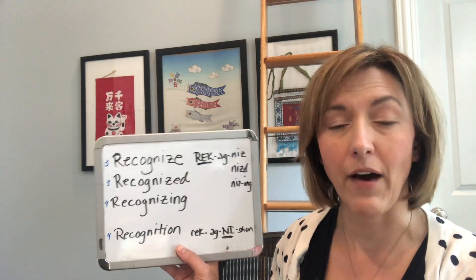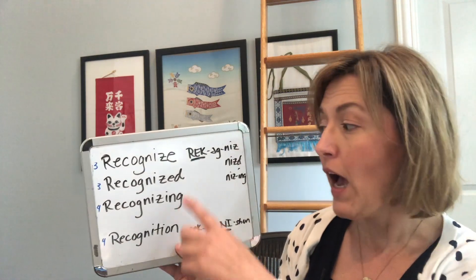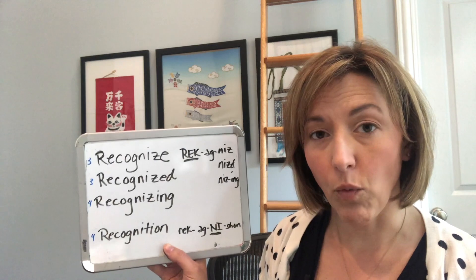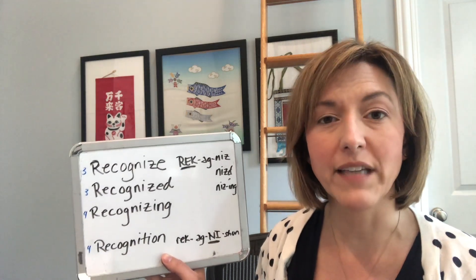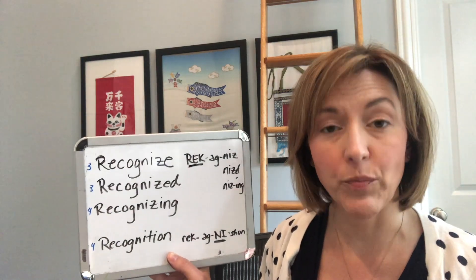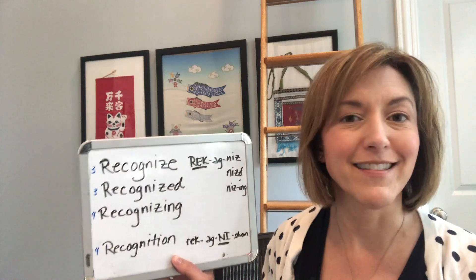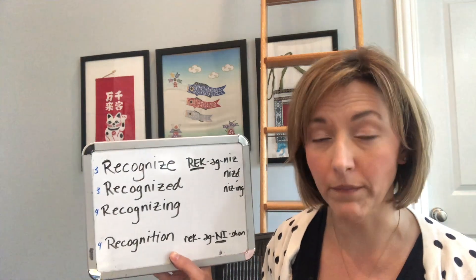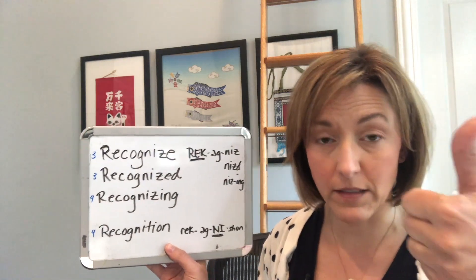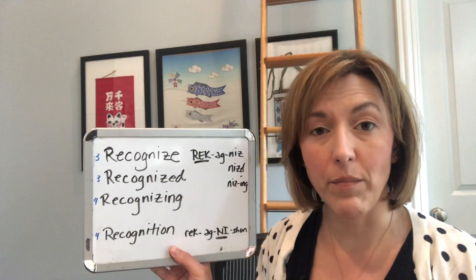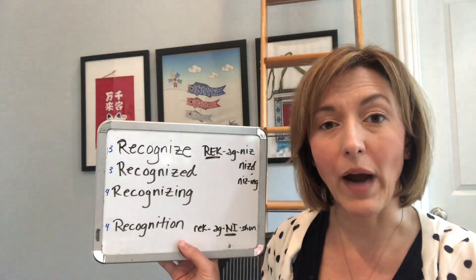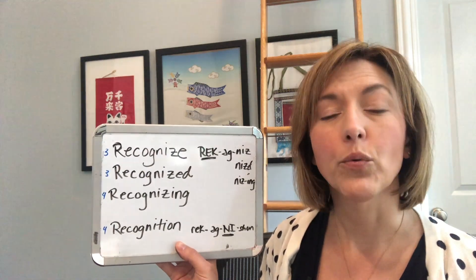When we add the -ed to this word — I actually have a class on how to pronounce -ed endings if you have more questions — because the word ends in a Z sound, which is voiced, we're going to end the word with a D sound, since D is also voiced. This does not add another syllable; we just add that extra sound to the end of the word. Stress syllable one: rec, recognized, recognized.